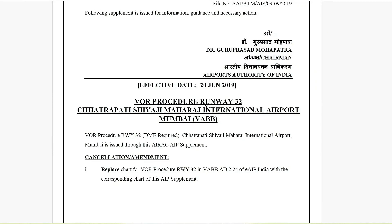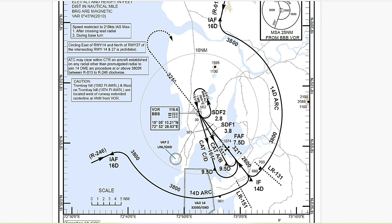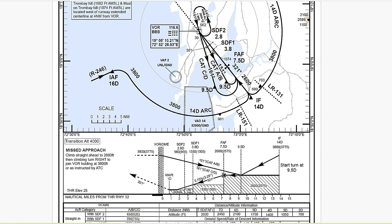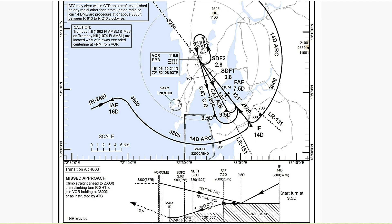This is the VOR procedure to land on runway 32 of Mumbai airport. For the VOR approach, you follow radial 161 until 9.5 DME. At 9.5 DME, you level down until 7.5 DME. At 7.5 DME you have your final approach fix — you must be at the correct altitude and on the correct track. Then you descend to land on the runway, following the descent profile. You can also get distance and altitude values to follow at particular DME distances. In case of a missed approach, fly radial 321 outbound, climb straight ahead to 2,600 feet, then a climbing right turn to join the VOR hold at 3,800 feet or as instructed by ATC.